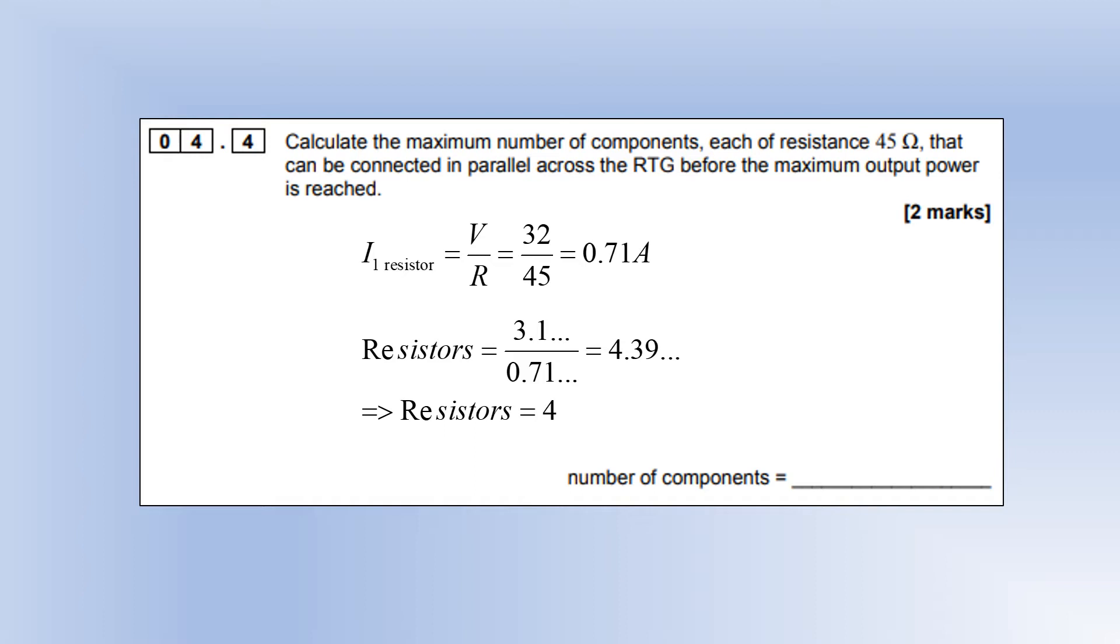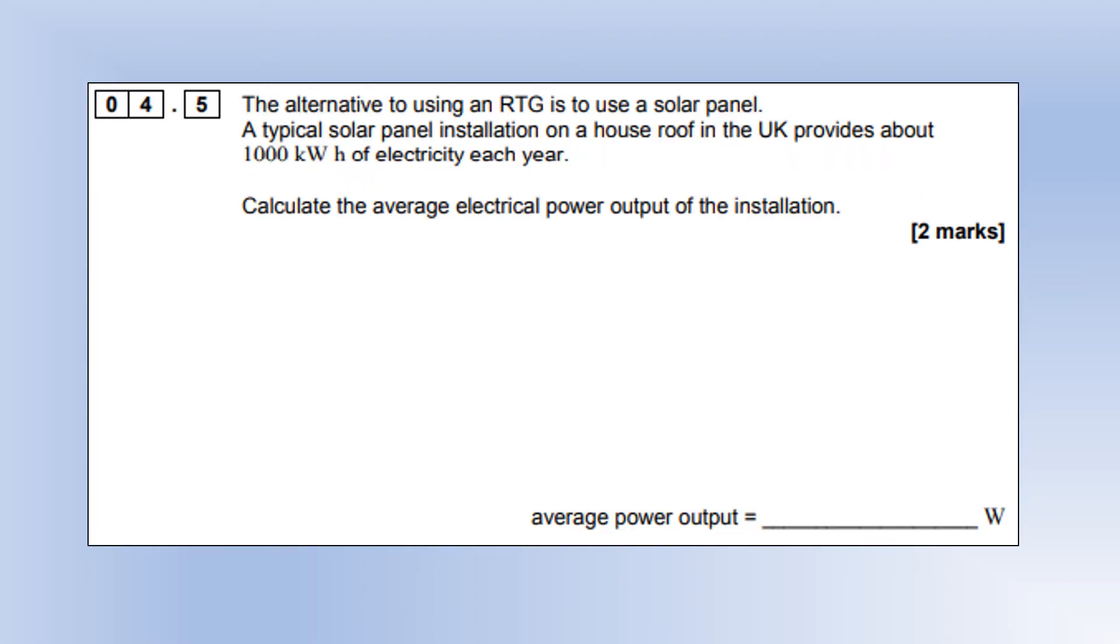An alternative to using an RTG is to use a solar panel. A typical solar panel installation on a house provides about 1000 kilowatt-hours of electricity each year. Calculate the average electrical power output. One year is 8760 hours, so the power is about 0.1 kilowatts or 14 watts.